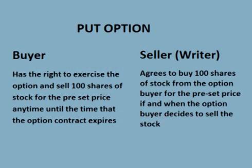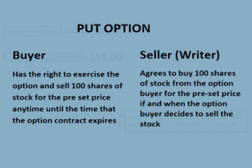To protect his position, he buys a put option that expires in one month as an insurance policy. This put option allows him to sell the stock for $18 anytime between the time the option was purchased and the time it expires a month later, no matter what the price of the stock is at that time. He pays $0.33 per share to do this, for a total cost of $33 plus commissions.